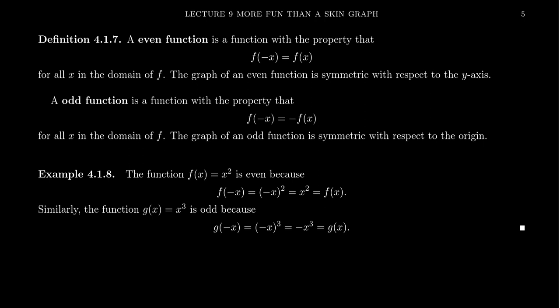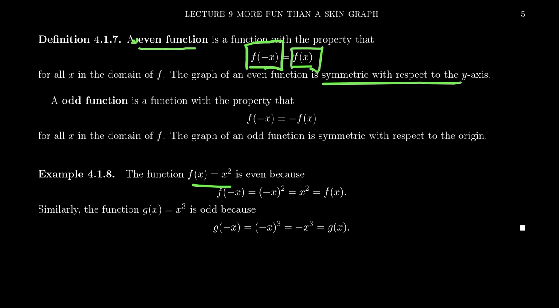As a reminder, an even function is a function with the property that f of negative x is equal to f of x. Geometrically, f of negative x is equivalent to reflecting a function across the y-axis, and f of x is the original function. So if f of negative x equals f of x, that tells us the function is symmetric with respect to the y-axis. We call that an even function. The poster child of an even function is f of x equals x squared — you can take any even integer for the power of x.